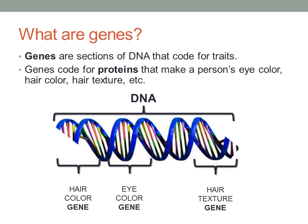So what are genes? We've been over this a couple of times already, but genes are sections of DNA that code for traits. Genes code for proteins that make a person's eye color, hair color, hair texture, etc. So if you see this long piece of DNA, each section will code for a certain gene.